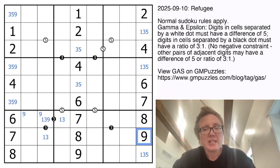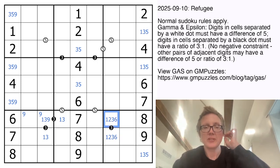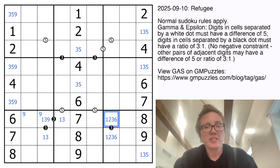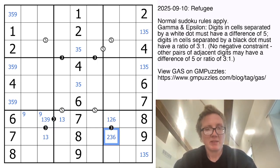Now, this pair cannot have a 9 in it, so this is either 1 and 3 or 2 and 6. There is definitely a 3 in one of these, so this can't be a 3, meaning that can't be a 1. This can't be a 6 because there's a 6 in the row, meaning that can't be a 2.